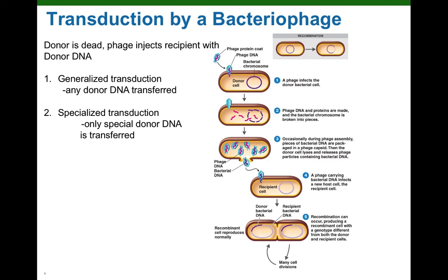That increases genetic diversity in the bacterial population, which increases the chance that the population will survive in ever-changing environments. Now we'll finish with the third type of horizontal gene transfer: transduction. Be careful — it's easy to confuse transformation with transduction. In transduction, donor bacterial DNA is going to be transferred to the recipient by a bacterial virus, or bacteriophage. Once we get into the virus unit we'll talk about different types of bacteriophage and then two different types of transduction, but right now we're just going to keep it really simple.